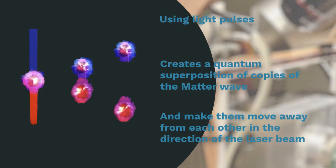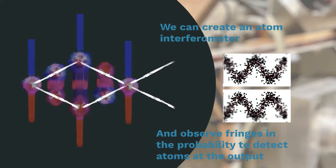We manipulate these matter waves with light pulses to create a quantum superposition of copies of the wave that will move away from each other in the direction of the laser beam. We can then create an atom interferometer and observe fringes of the probability to detect atoms at the output of the interferometer.